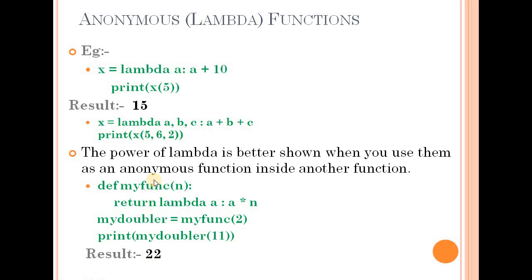Another example uses a lambda function inside another function. Define my function of n, and return lambda a colon a multiply n. For example, 2 into 11 gives 22. One argument, one expression — that is a lambda function. This is the anonymous or lambda function.